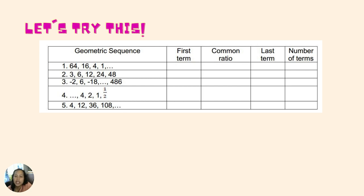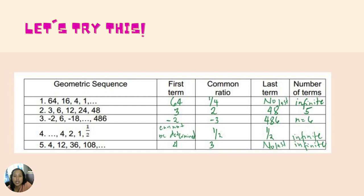For this geometric sequence exercise, you are going to identify the first term, the common ratio, the last term, and the number of terms. For number one, the first term is sixty-four and the common ratio is one-fourth — since sixteen over sixty-four gives one-fourth, and four over sixteen also gives one-fourth. The last term cannot be found, and there is no exact number of terms.